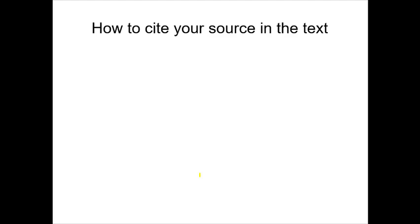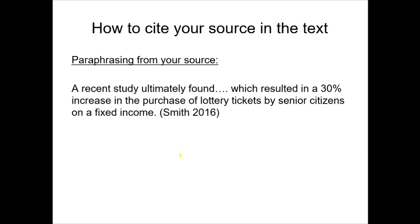How to cite your source in the text: the bulk of your writing is going to be paraphrasing from the articles you read. There are two basic ways to cite your source in the text and they're both pretty much the same. When paraphrasing from your source — let's say you're writing a paragraph coming from a particular source — by the end of that passage you'd say it came from, for example, 'Smith 2016.' Then I would go to your reference page at the end of your paper, look in alphabetical order, see who Smith was and what that article was, and that covers it.